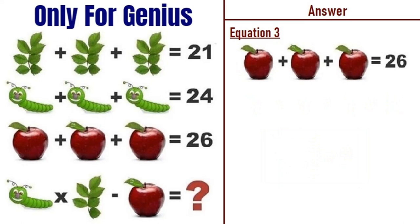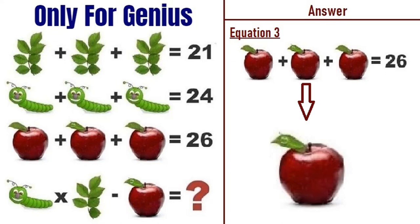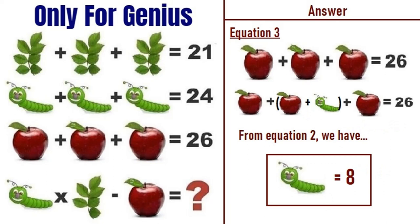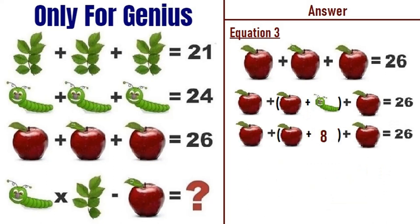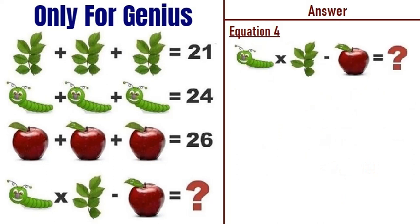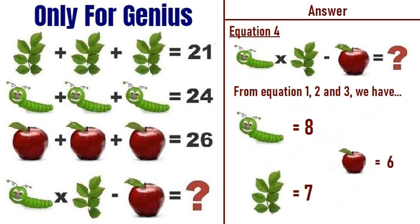Moving on to equation number three: apple plus apple-with-a-caterpillar-on-its-sleeve plus apple equals 26. That second apple has a caterpillar on its sleeve, so it becomes apple plus apple plus caterpillar plus apple equals 26. Substituting caterpillar equals 8, we get three apples plus 8 equals 26, so three apples equals 18, meaning a single apple equals 6.